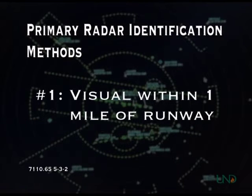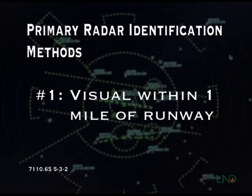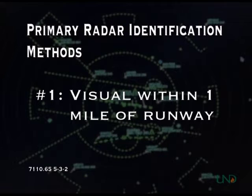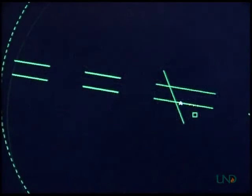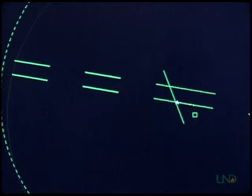The first primary radar identification method is observing a target within one mile of the departure end of the runway. This method is only valid if receiving a rolling call from the control tower. If a rolling call is not received, then another radar identification method must be used. In this example, Northwest 185 is departing from Academy Airport, and the tower makes a rolling call to departure.